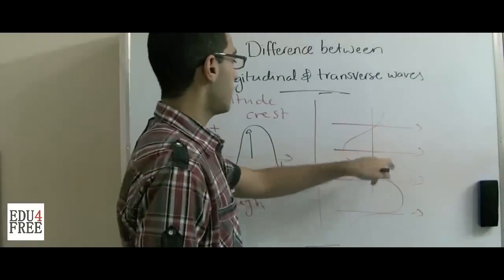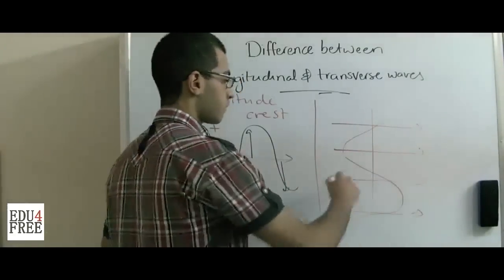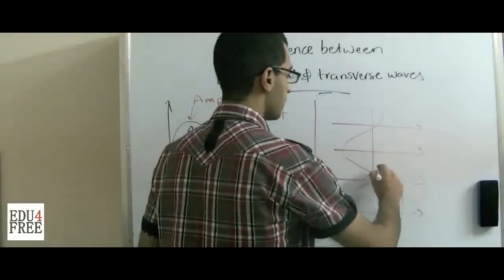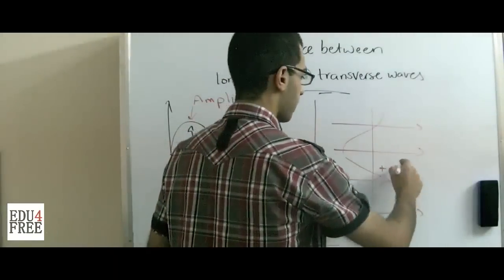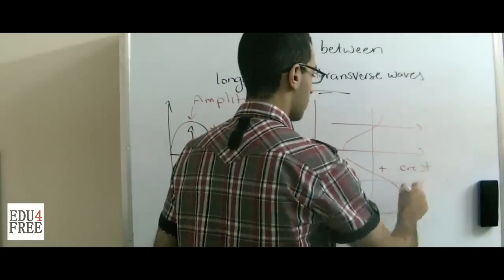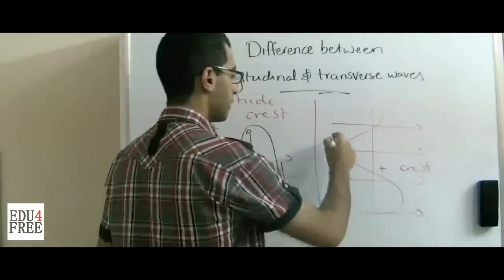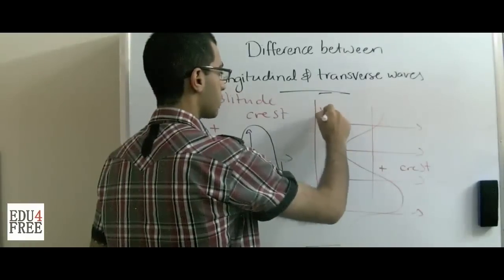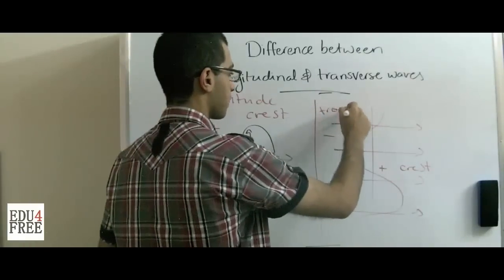Also here, in the longitudinal waves, the amplitude made in the positive direction is called a crest, while the one made in the negative direction is called a trough.